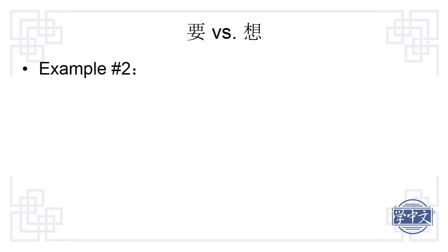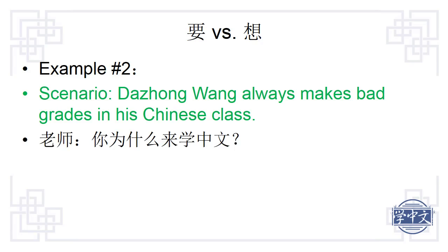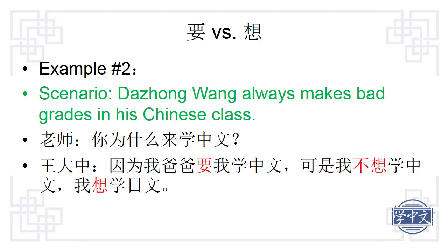Now we will look at one final example. 王大中 always makes bad grades in his Chinese class because he never studies. His teacher asks him why he is taking the Chinese class: 你为什么来学中文? 王大中 replies: 因为我爸爸要我学中文，可是我不想学中文，我想学日文 — Because my father wanted me to study Chinese, but I do not want to study Chinese. I want to study Japanese. These examples show various usages of 要 and 想, and this concludes the presentation.